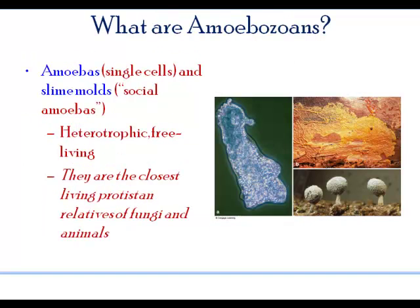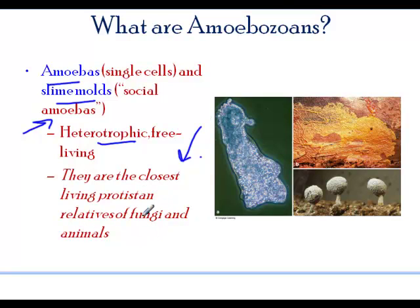Lastly, let's look at amoebas and slime molds, which are called social amoebas. They are heterotrophic and free-living, and they are the closest living protist relatives of the fungi and the animals. This has been a wide overview — you can almost spend a whole semester studying protists, and algae alone is a full semester topic. This concludes our section on protists.